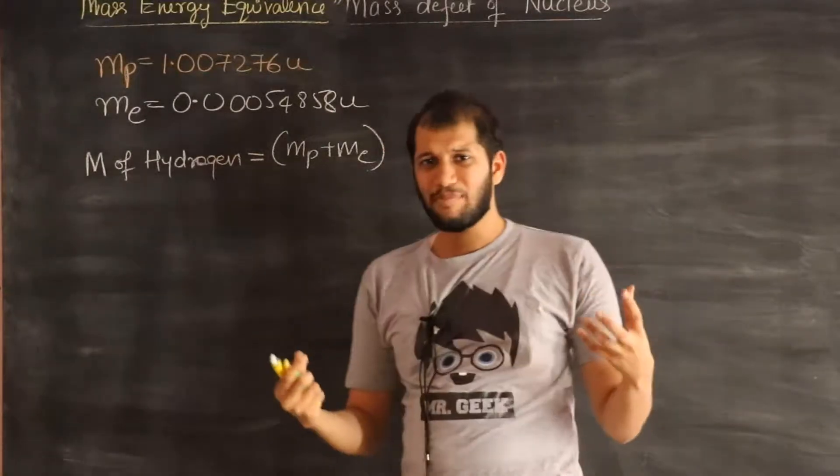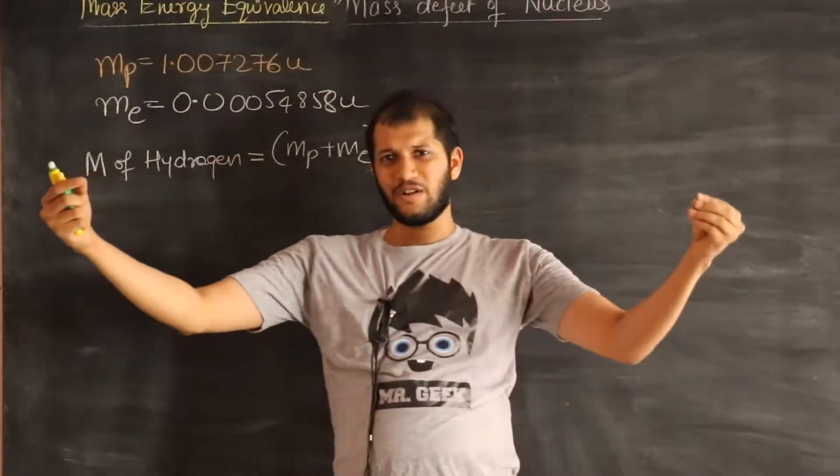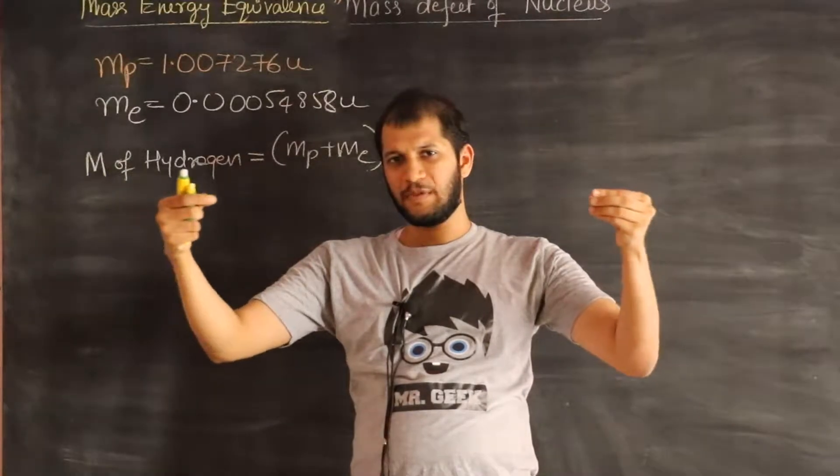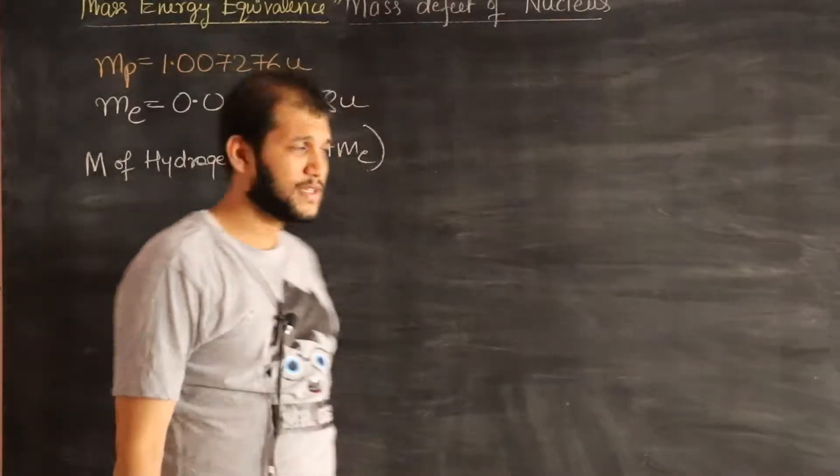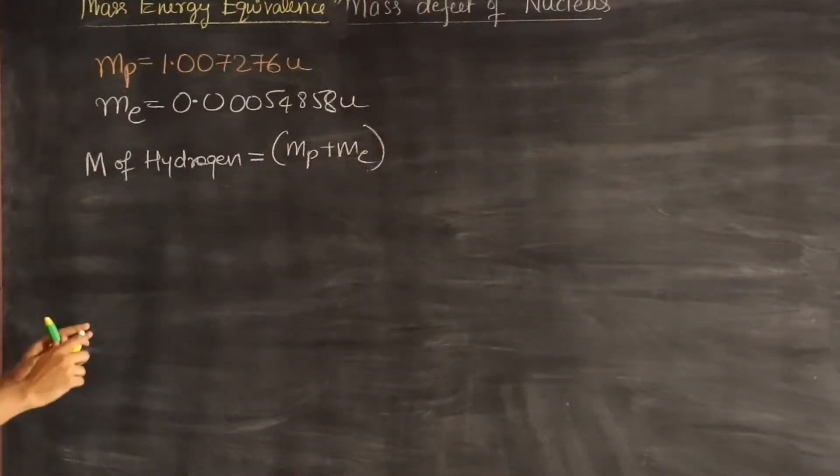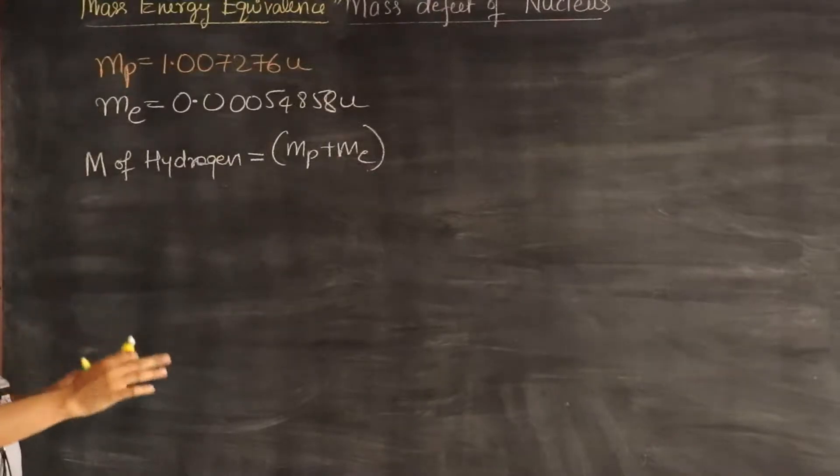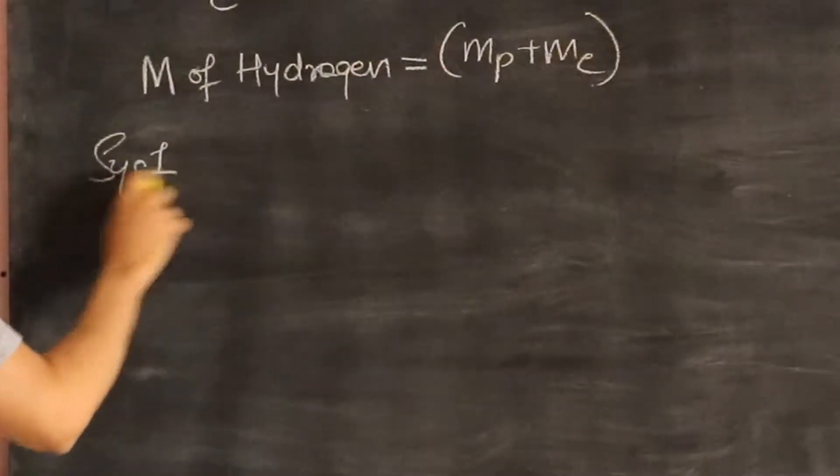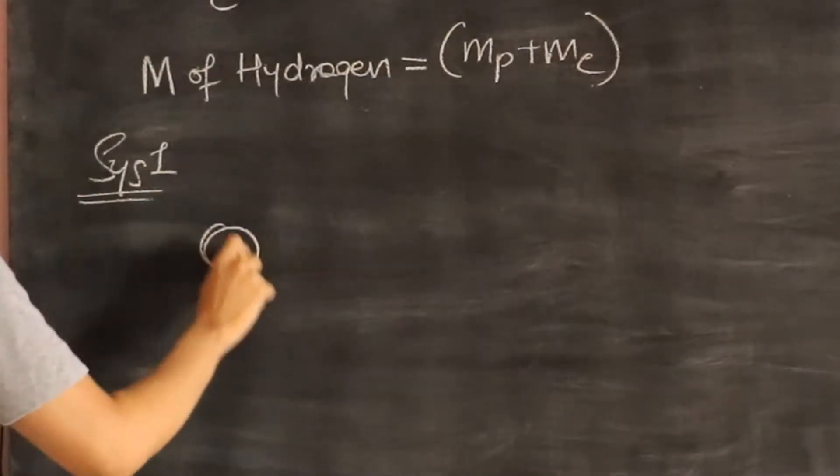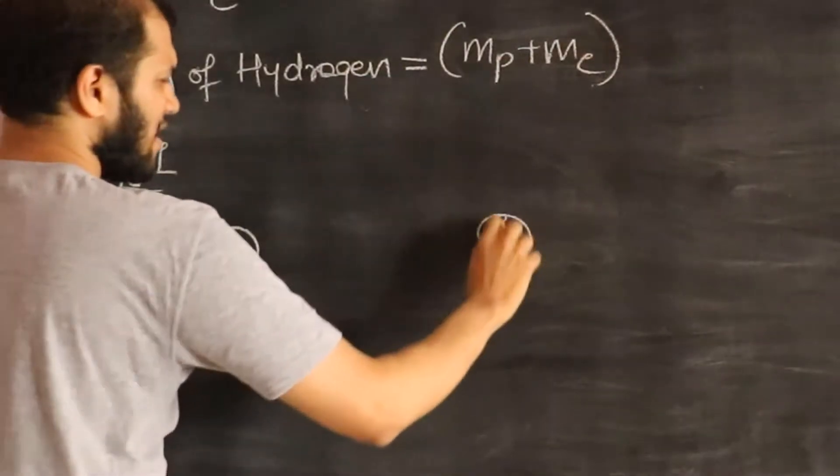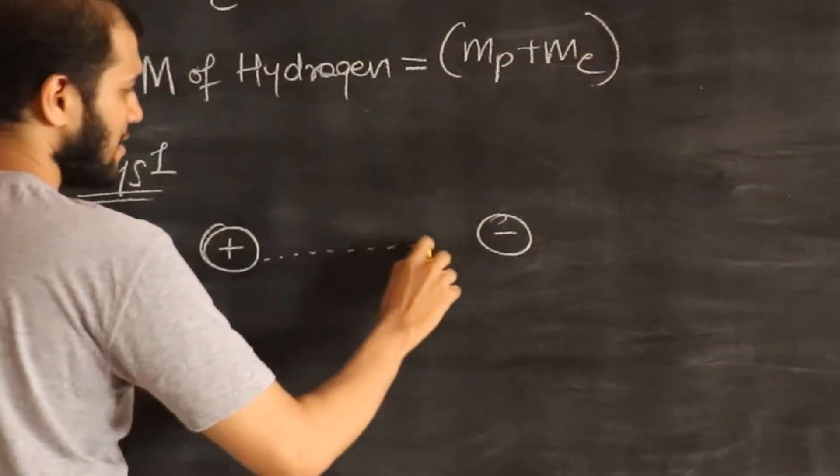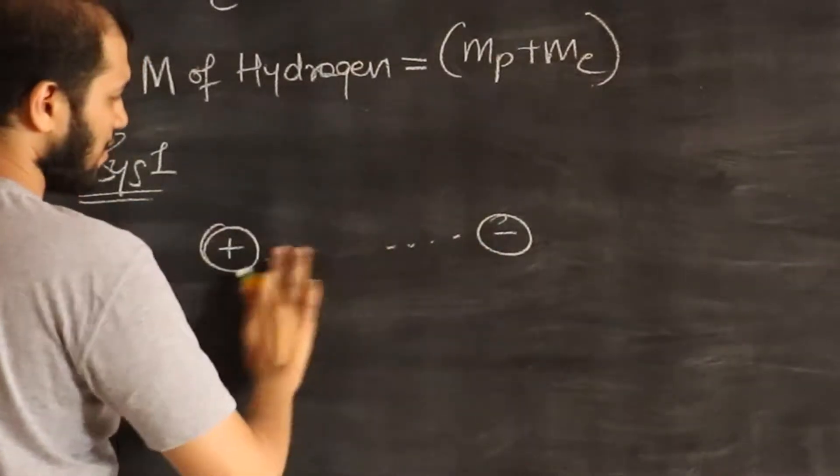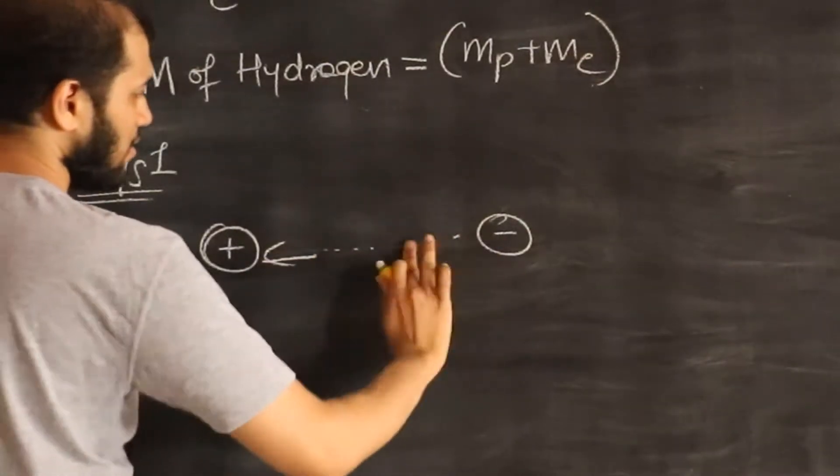Now comes the question, what happens when a proton and electron come close to each other? So think about it. Let's consider the two systems. We'll consider a system where the protons and electrons are infinitely far away. So system 1 is here. Here is my proton, and here is my electron, and these guys are infinitely far away.